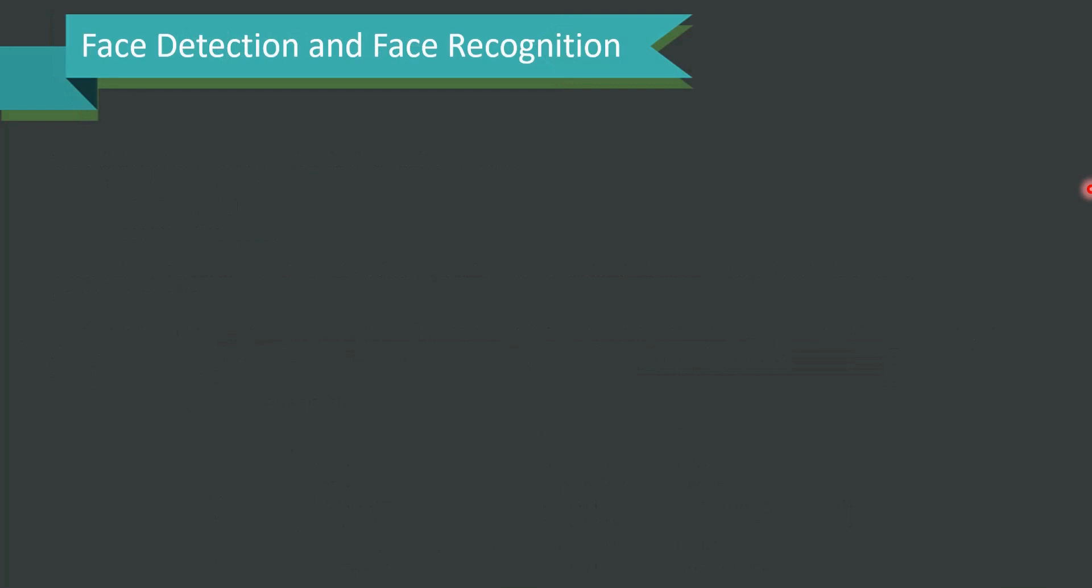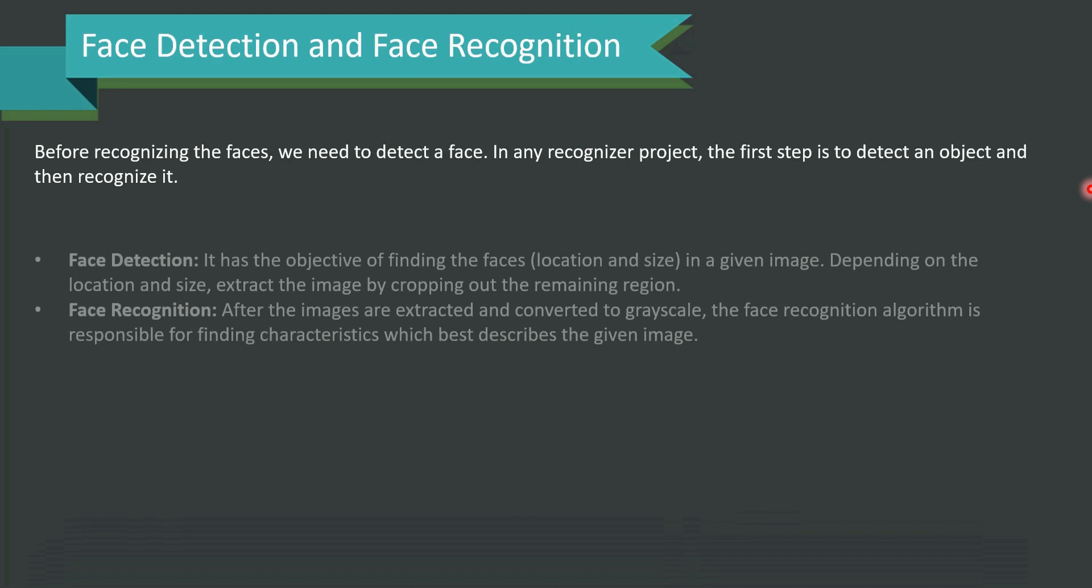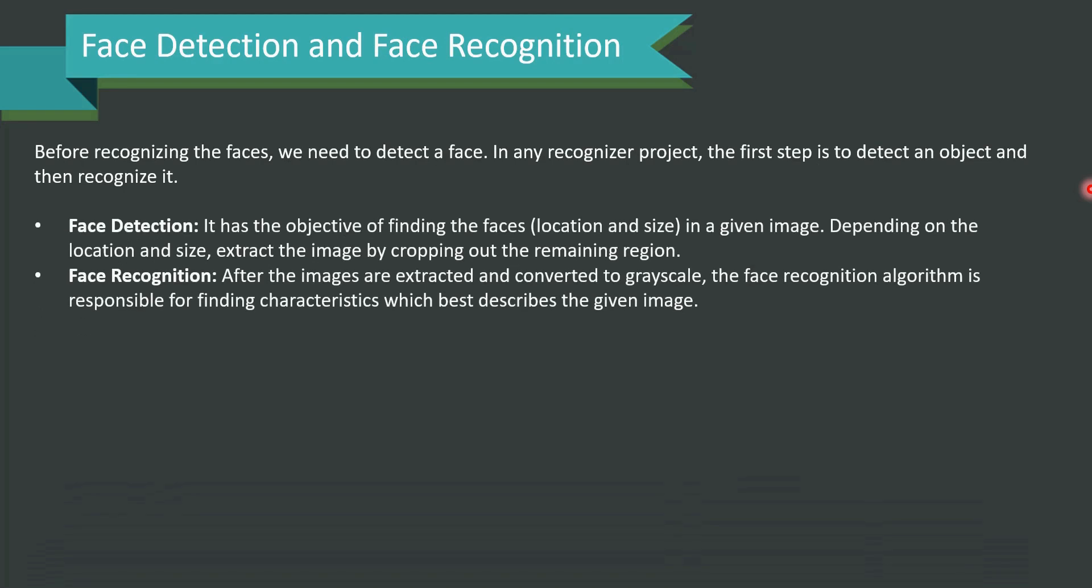Face Detection and Face Recognition. Before recognizing the faces, we need to detect a face. In any recognizer project, the first step is to detect an object and then to recognize it. Let's understand what is face detection first. It has the objective of finding faces in a given image. Depending on the location and size, extract the image by cropping out the remaining region.